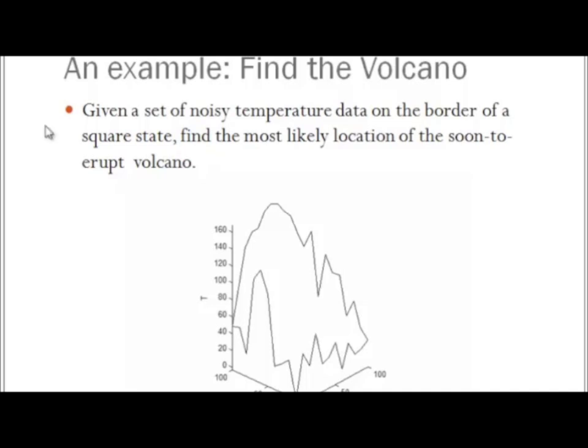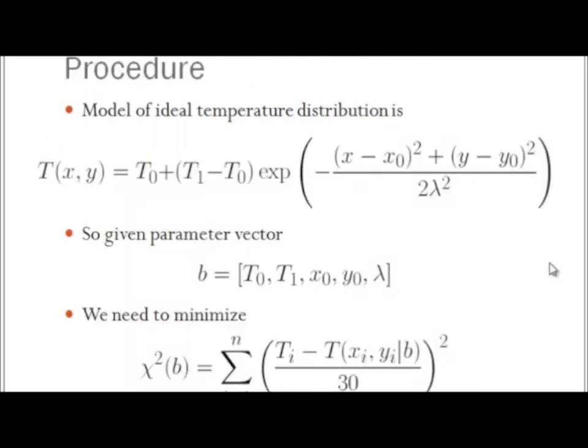So here is our data. It's very noisy. And we have a model that we are given. Here is our temperature model of how the temperature distribution, with a base temperature, a max temperature, is distributed around x0 and y0, the location of the volcano. We model this as a Gaussian around the volcano.